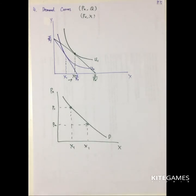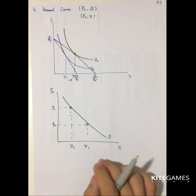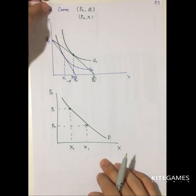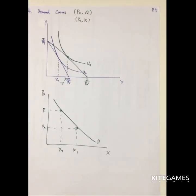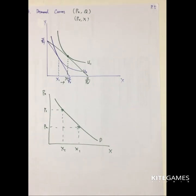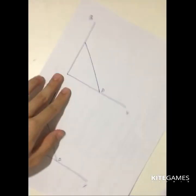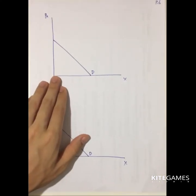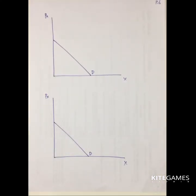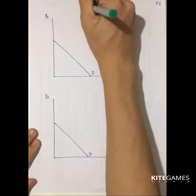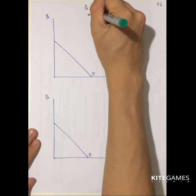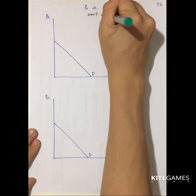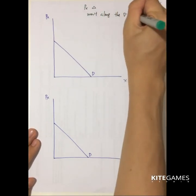Given the Hicksian demand curves, we can see two types of changes in the demand functions. From your introduction to economics, you know that when the price of X changes, this is represented by a movement along the demand curve.